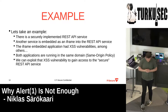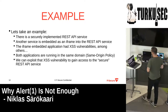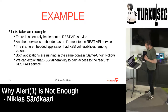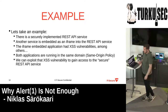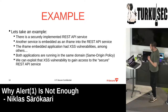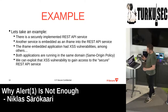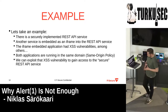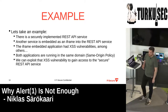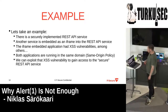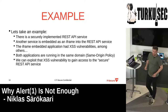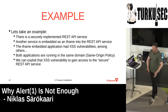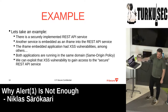Another example I've encountered in web app work: a client had a very securely implemented REST API service — there weren't really any issues in it. But what they'd done is implement and embed another service, an open source service, in an iframe within that application. Unfortunately for them — but lucky for me — the embedded application had an XSS vulnerability. Since it was embedded in an iframe on the same domain, same-origin policy applied. So I had full access to that same REST API service, which was the most critical service they had.